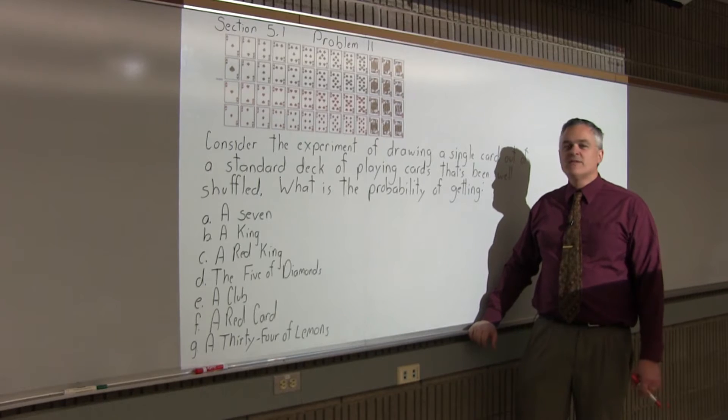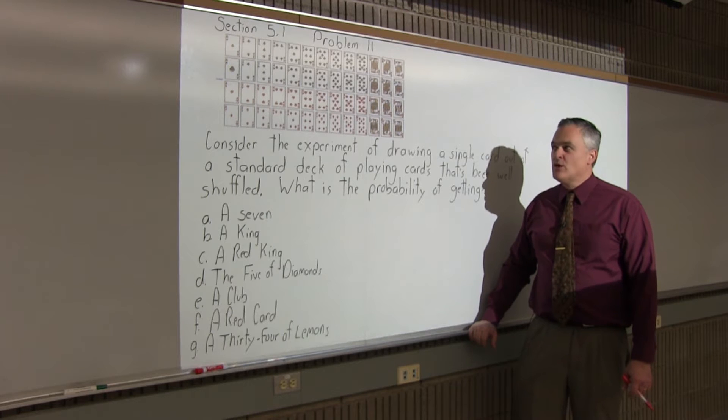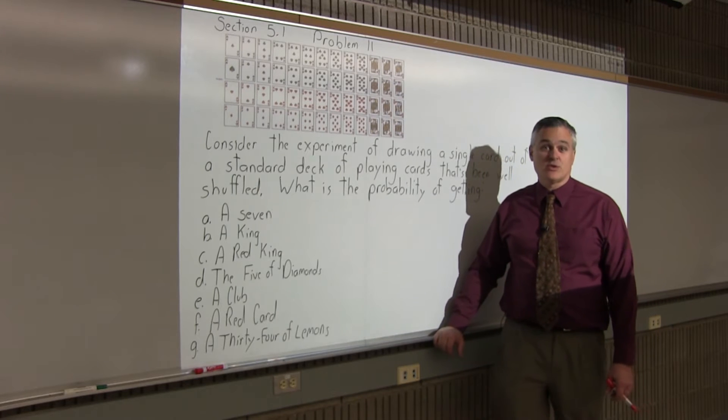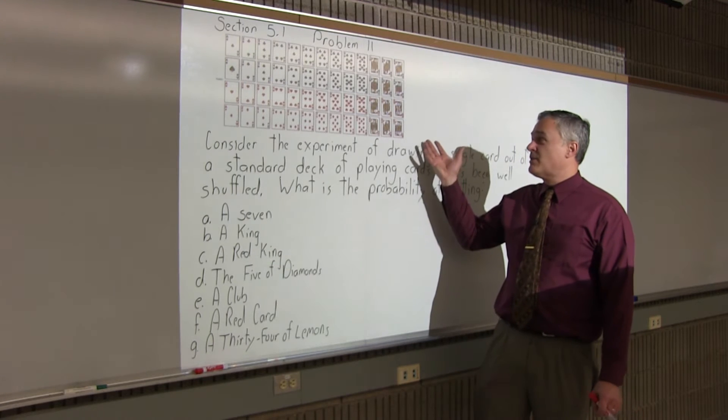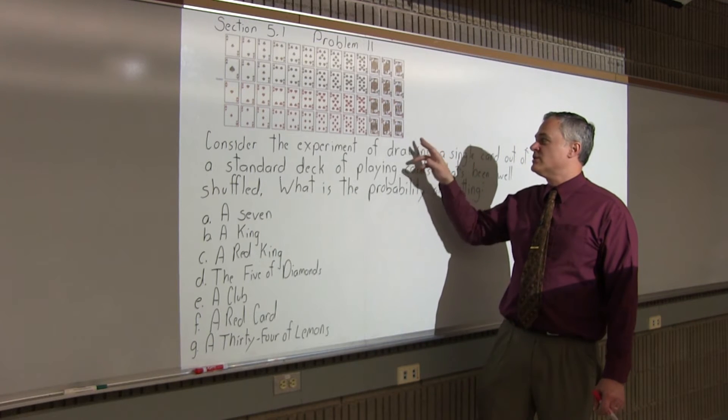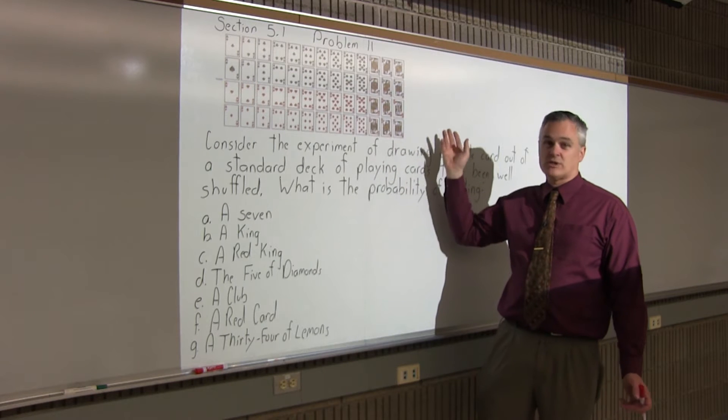So, what's the probability of getting a 7? Well, first of all, you have to realize that there's a total of 52 cards in the deck altogether. You could count them out. Most people probably know that, but if you don't, you can just see that there are four rows of 13.